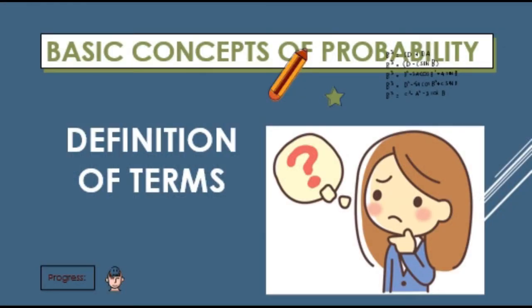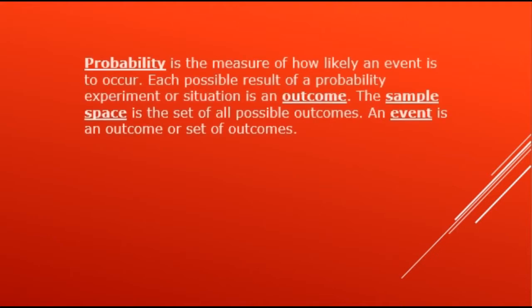Definition of Terms. Probability is the measure of how likely an event is to occur. Each possible result of a probability experiment or situation is an outcome. The sample space is the set of all possible outcomes. An event is an outcome or set of outcomes.